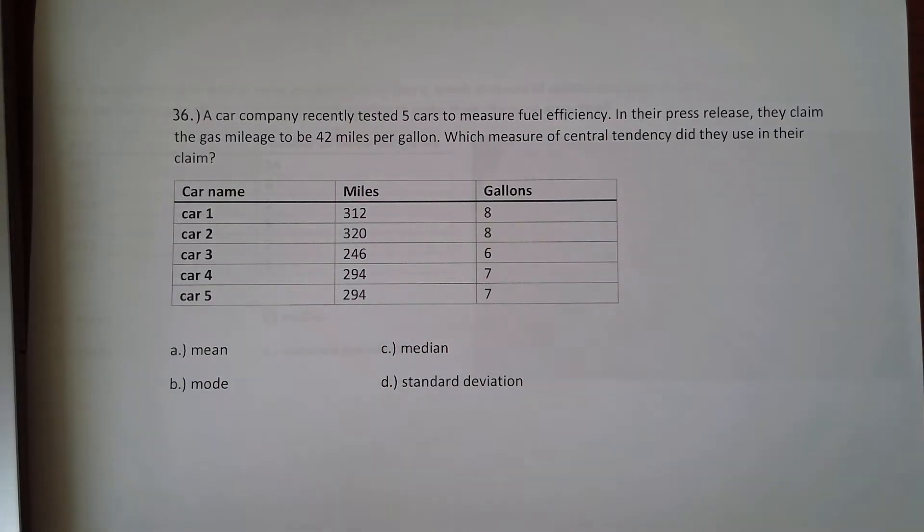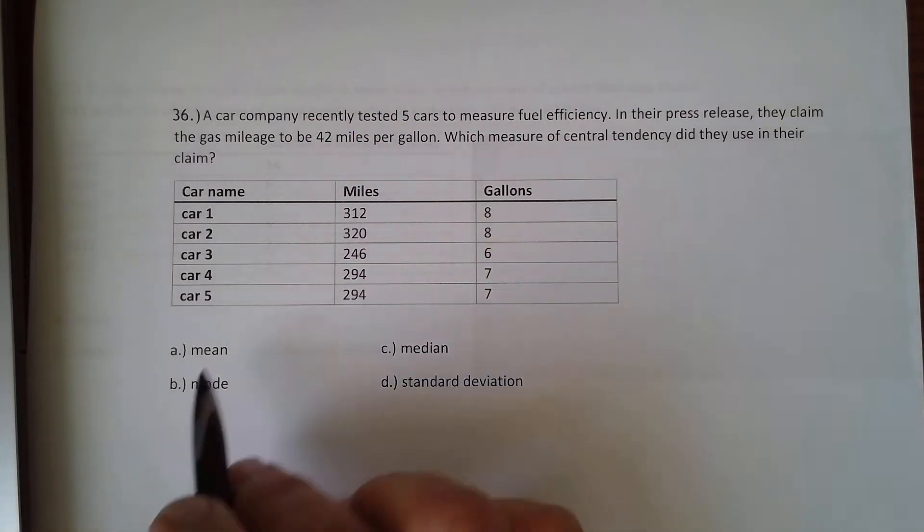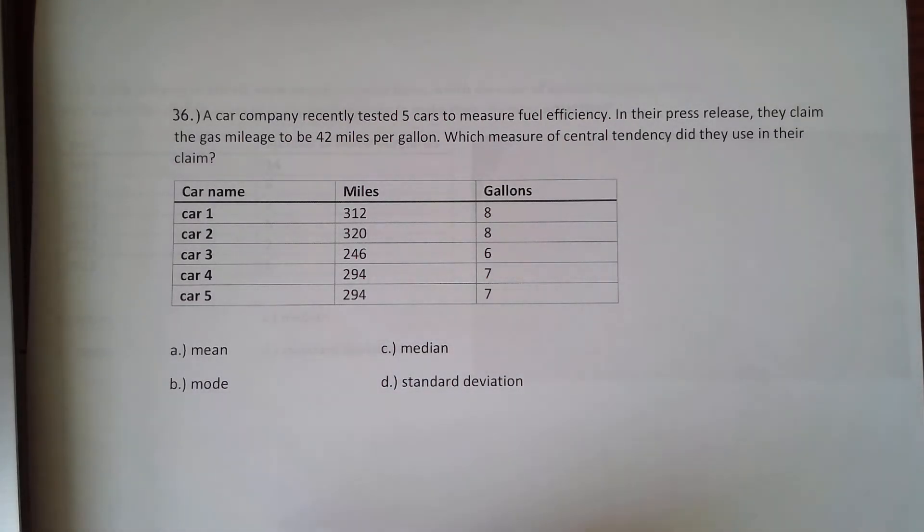In this problem, we're going to need to figure out which of the measures of central tendency, which there's four options here, did the company use when they said that their car gas mileage is 42 miles per gallon.